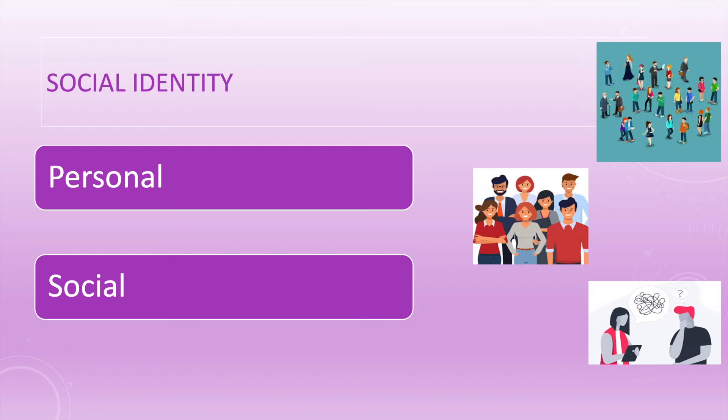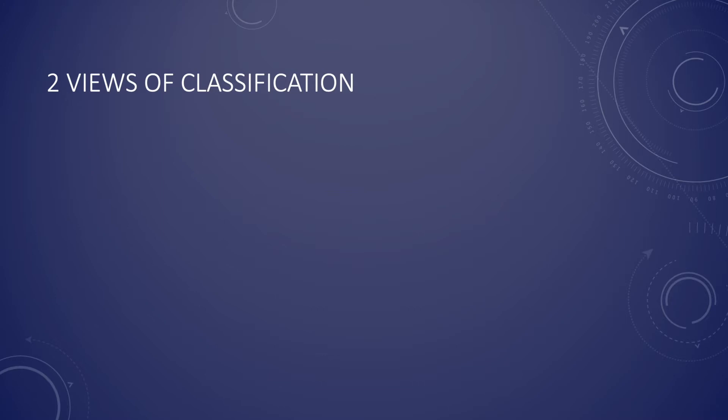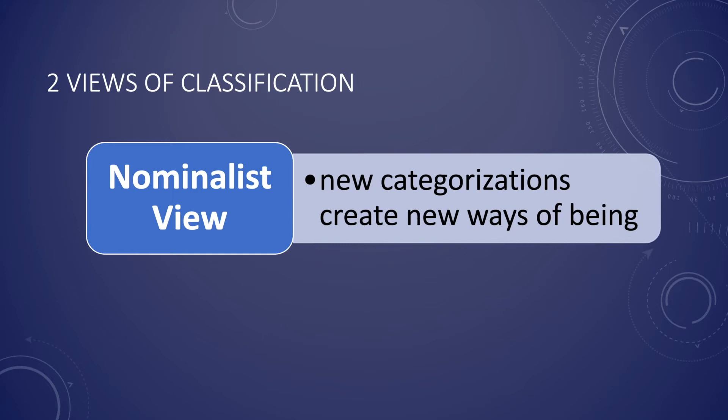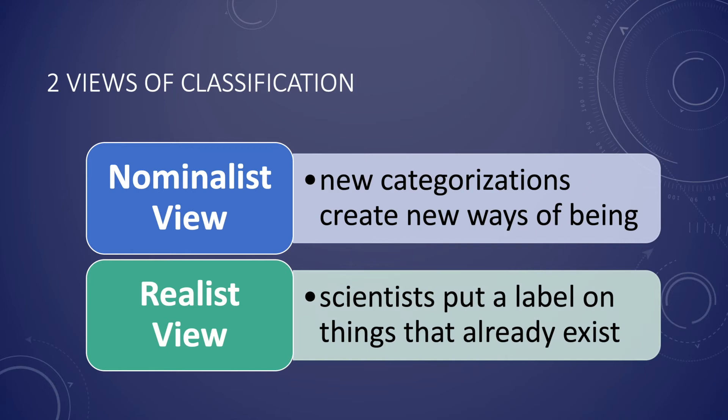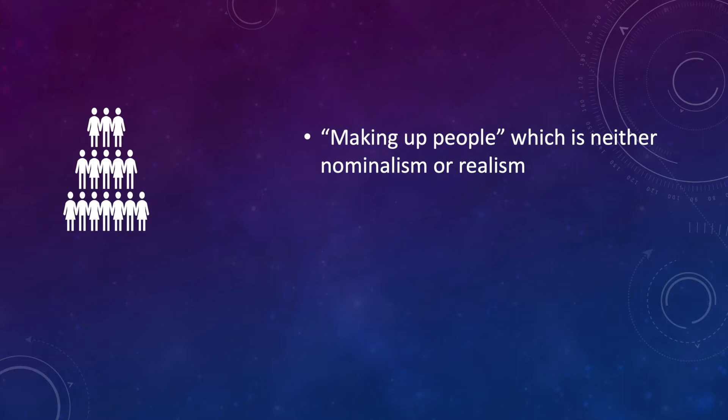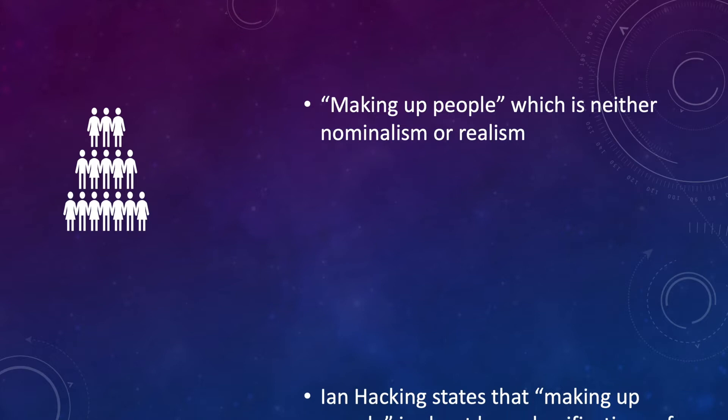One must also understand the two views of classification that came before Ian Hacking: the nominalist view, which is the idea that new categorizations create new ways of being, and the realist view, which states that scientists put a label on things that already exist. People don't just categorize objects, but also people. This is where Hacking created the term 'making up people,' which is neither nominalism nor realism.